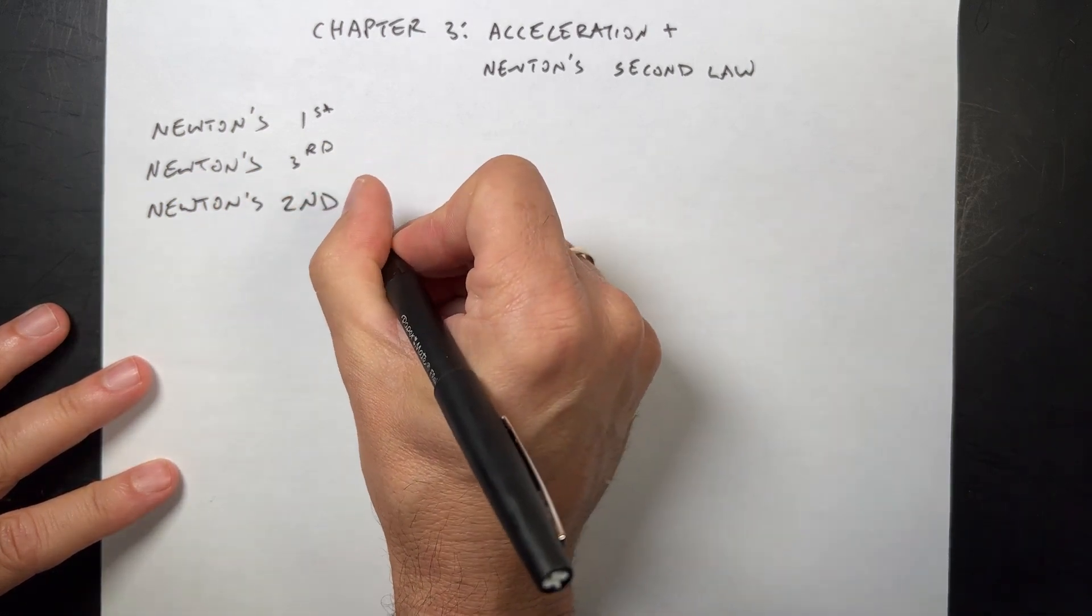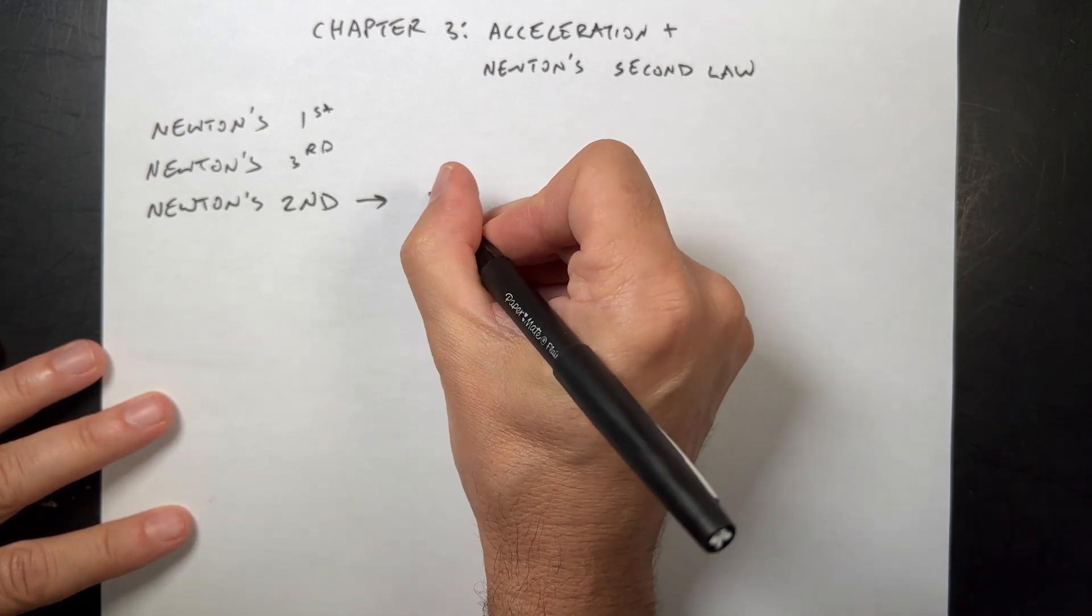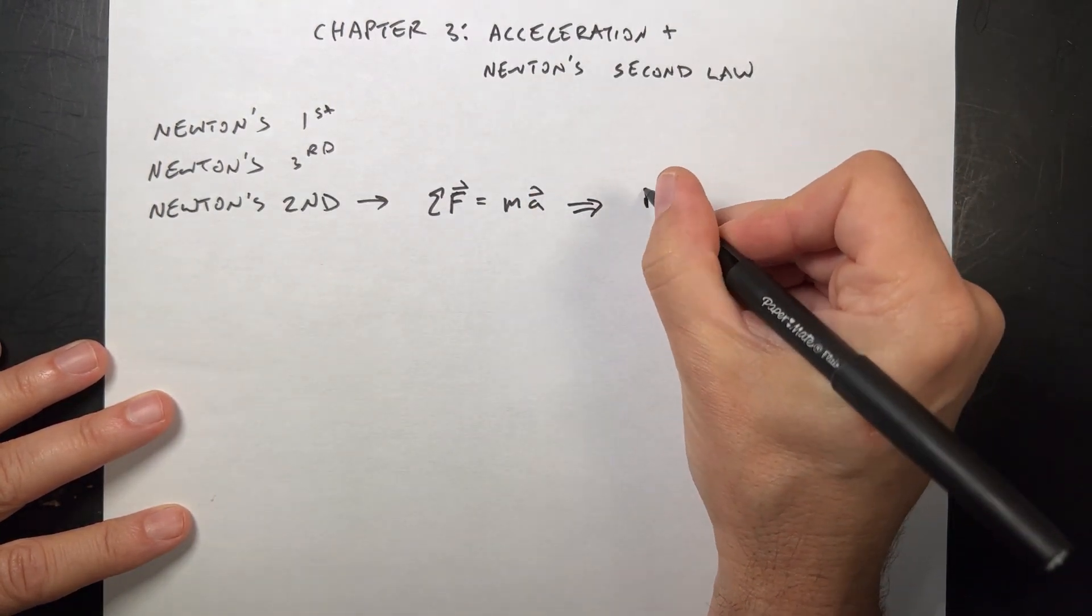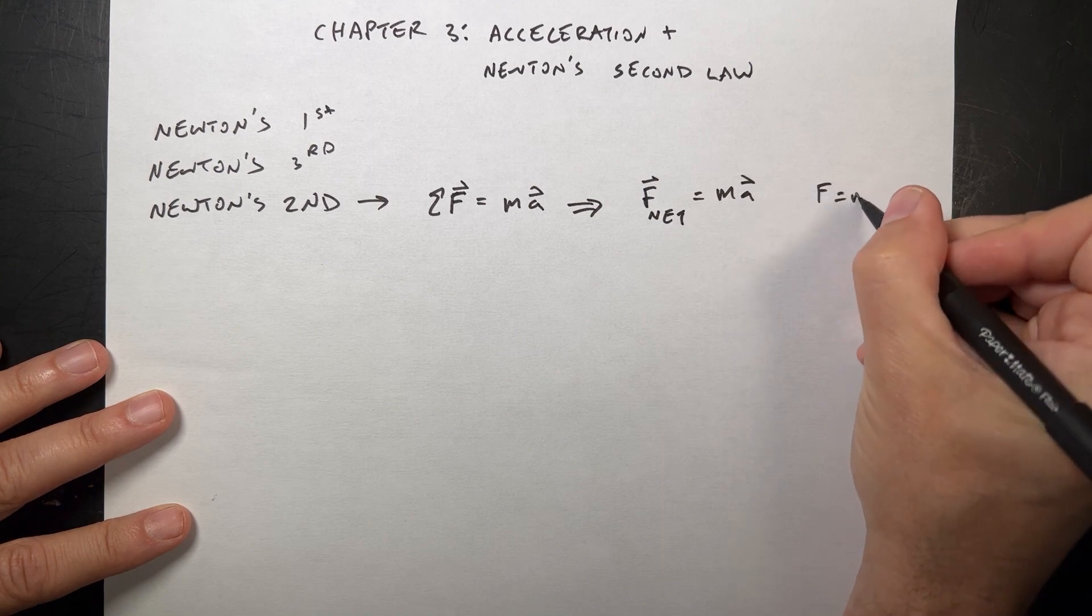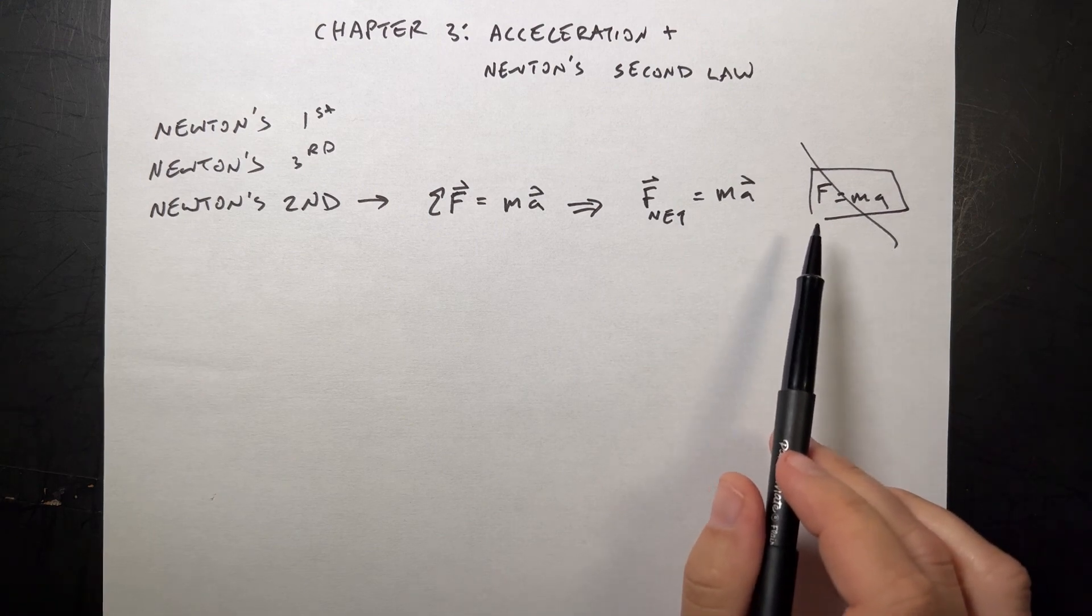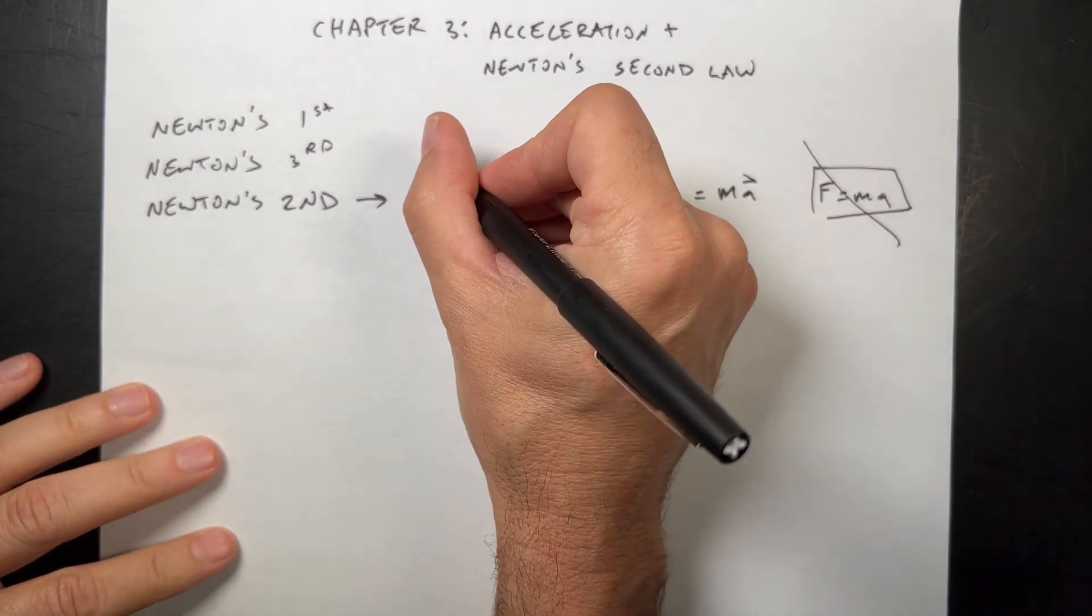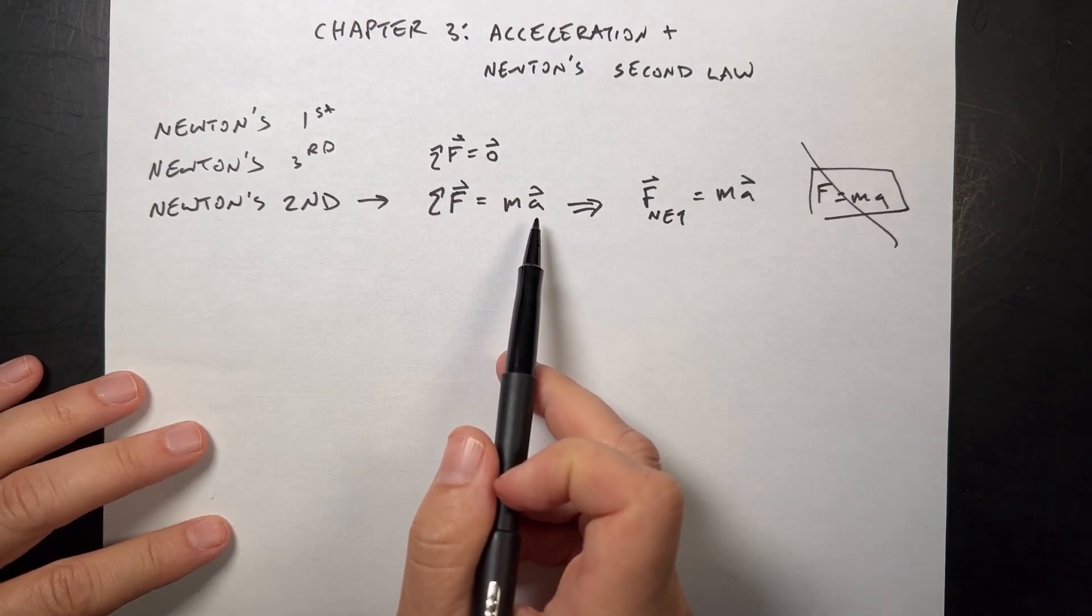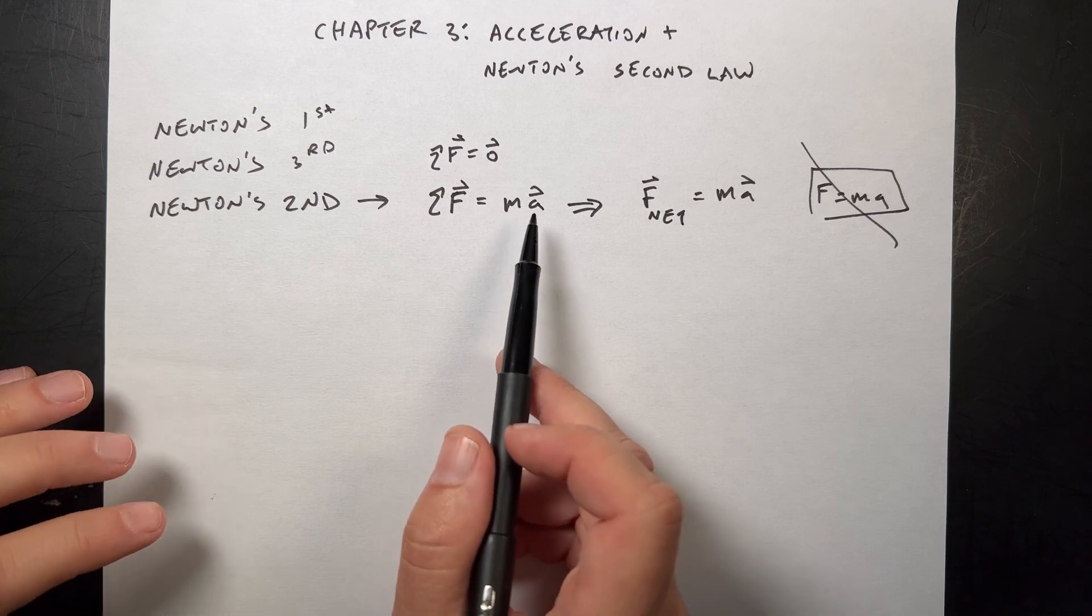Newton's second law, we can write as an equation. I'll write it as the sum of F or F net. It says the sum of the forces on an object as a vector is equal to the mass times acceleration. I typically write this as F net equals mass times acceleration. Be very careful. This is very common and very wrong: if you write F equals ma, one, it's not a vector, and two, it's the net force that matters, not just one single force.